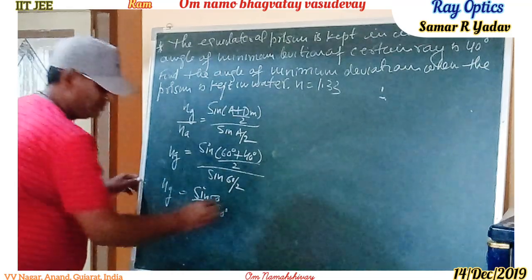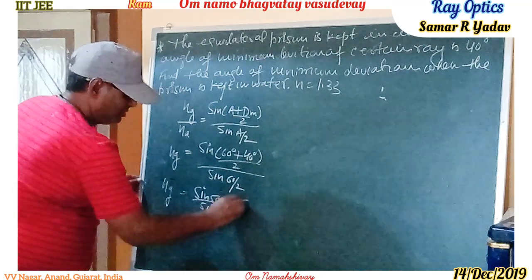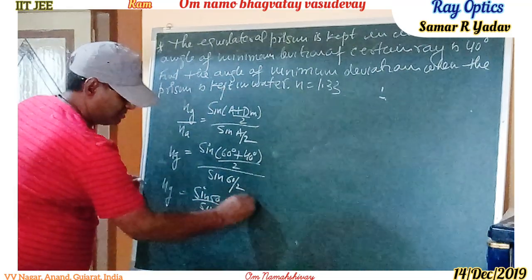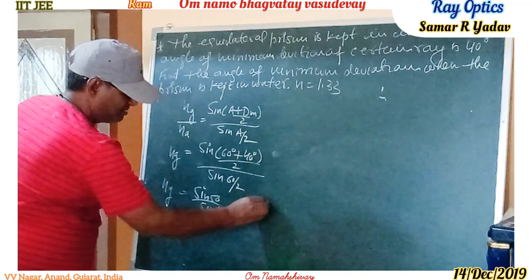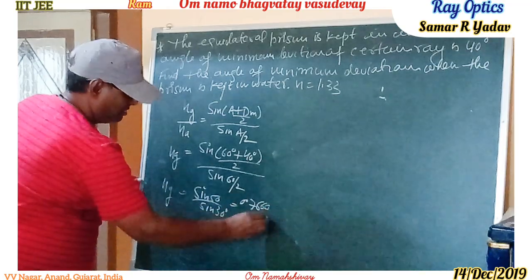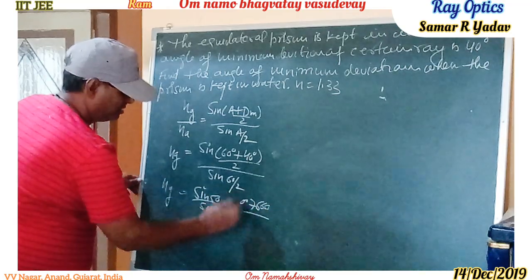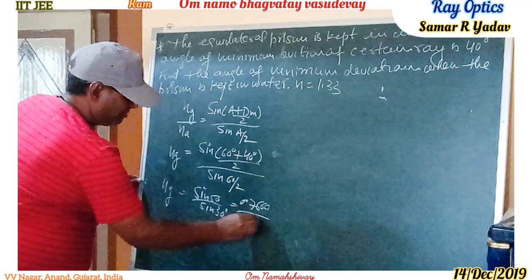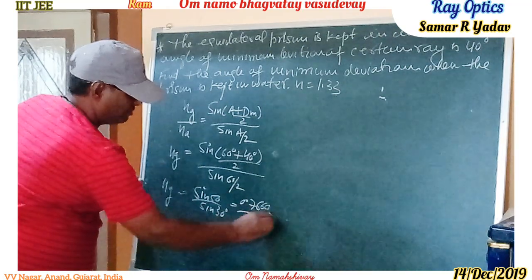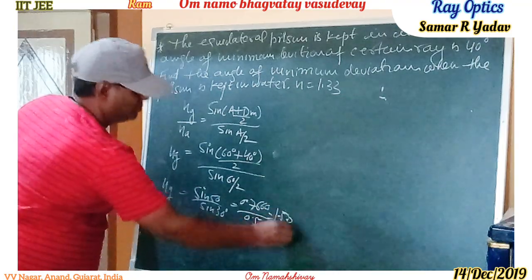So we can write here: 0.7660 upon 0.5 is equal to 1.532. So the refractive index of the glass prism is 1.532.